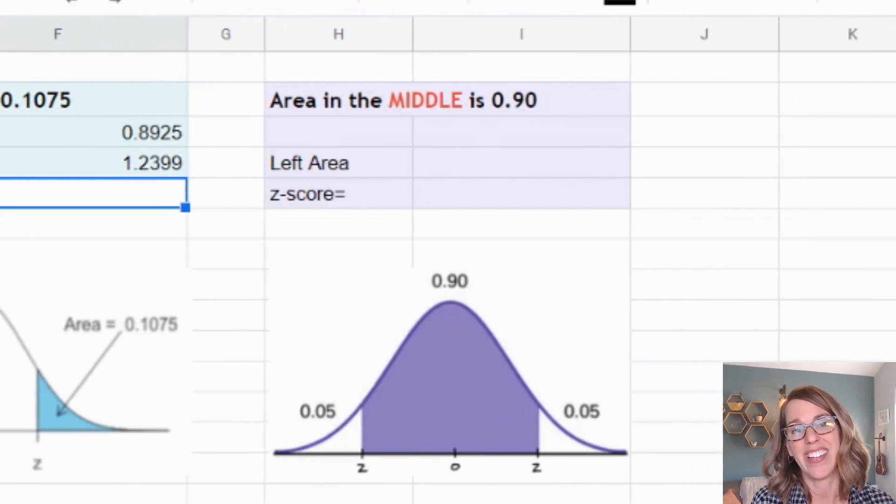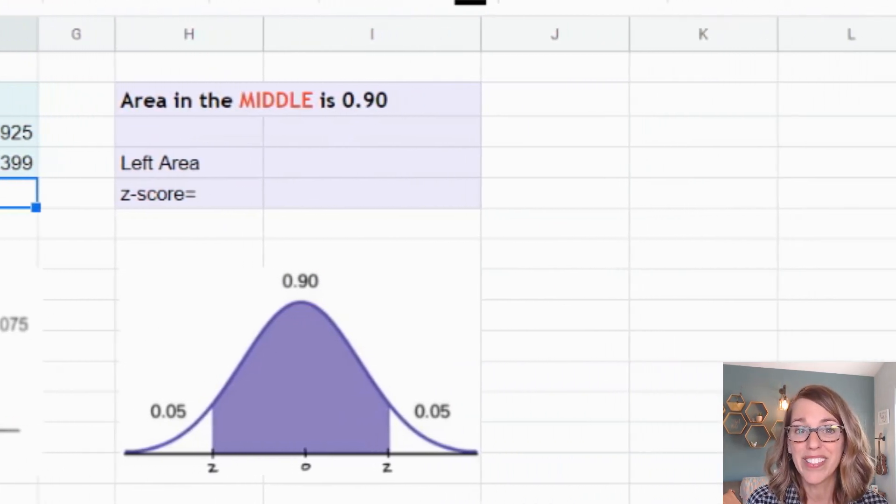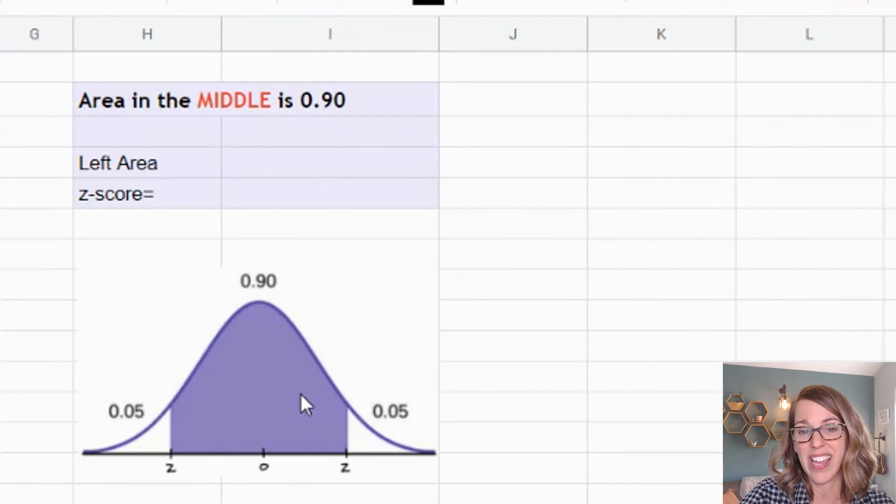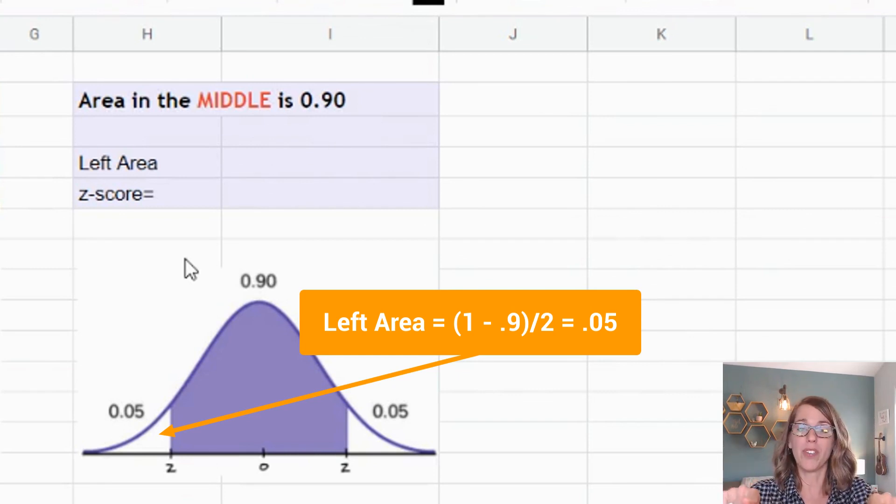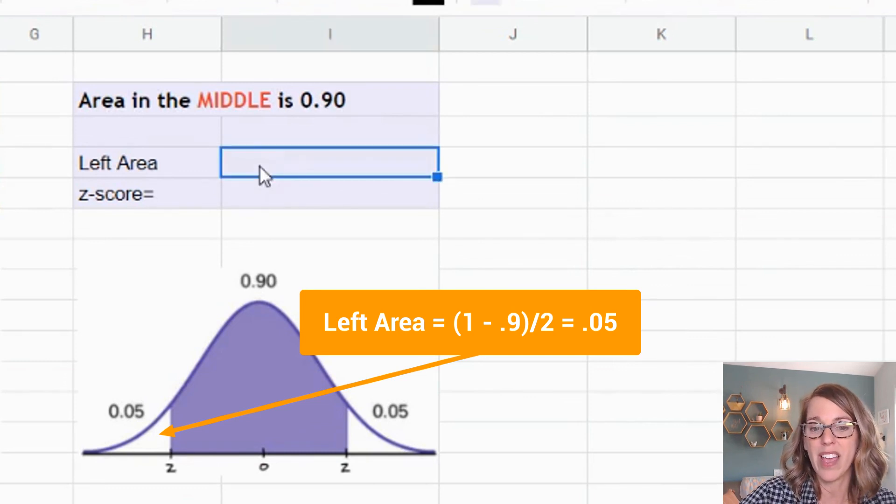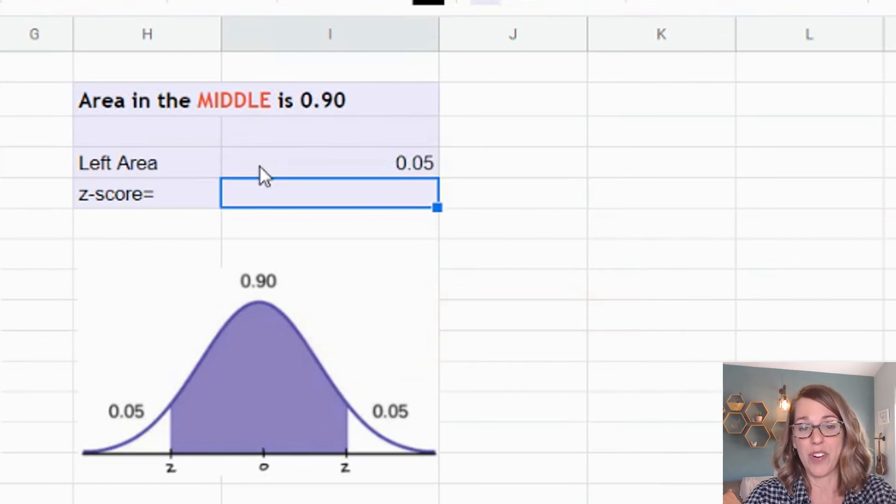Next we've got an area in the middle. The area in the middle is 0.9. One minus 0.9 is 0.10, so I had to split that 0.10 into my two tails. I've got 0.05 on the left, so my left area is 0.05.